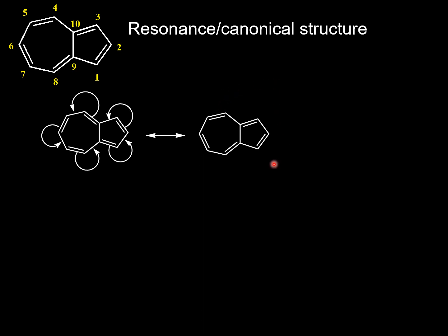An interesting fact is that azulene does have an appreciable dipole moment, implying a contribution of dipolar resonance structures. In order to explain this observation, one has to look at the dipolar resonance structure of azulene. So, let us draw the dipolar resonance structure of azulene.